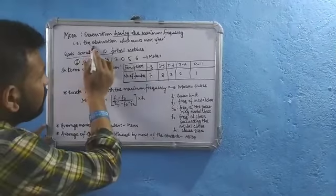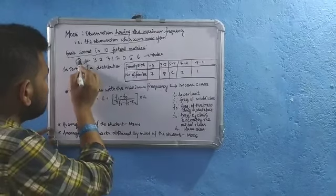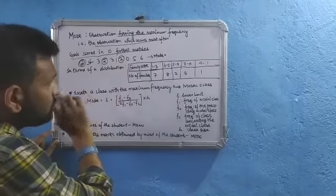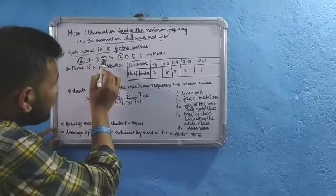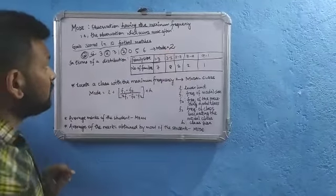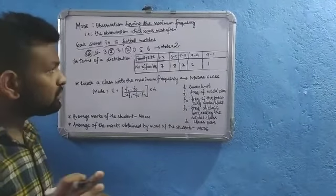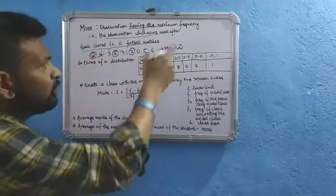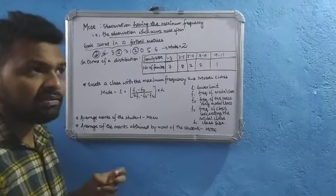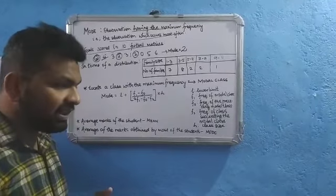Now, mode is the observation which occurs most often. In the first match he scored 2 goals, in the fourth match also 2 goals, and in the seventh match also 2 goals. So 2 is occurring for the maximum number of times — the mode for this data is 2.